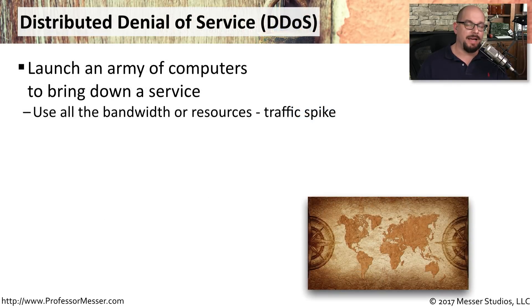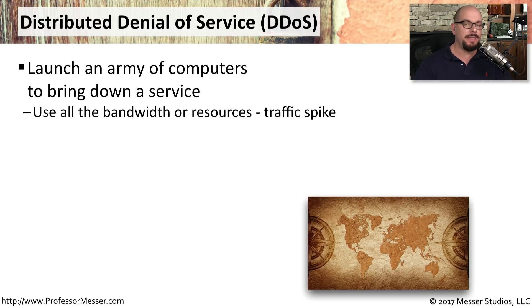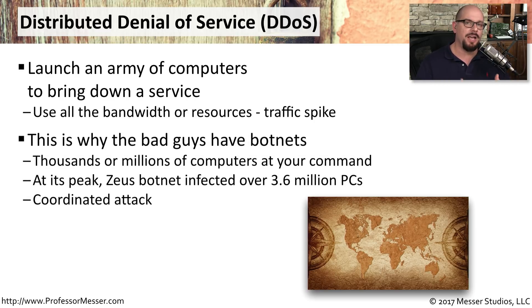A distributed denial of service is one where the service is being denied because the attack is coming from many places all at the same time. There could be an army of botnets that have been programmed to take down a website. They come from many different locations, and it becomes almost impossible to stop all of them because there are so many different places they're coming from. This is why the bad guys spend so much time infecting computers with botnets — so they can control them and direct them.